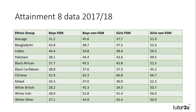Looking at average GCSE performances, boys on free school meals average 31.2 points from their eight GCSEs, whereas boys who are not on free school meals average 45.6 points — a significant difference. Free school meals is often used as an indicator of social class, though it can be argued to be somewhat flawed, but this data clearly shows the impact of deprivation on students.